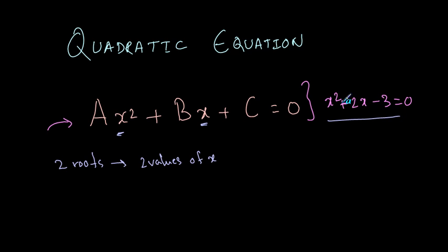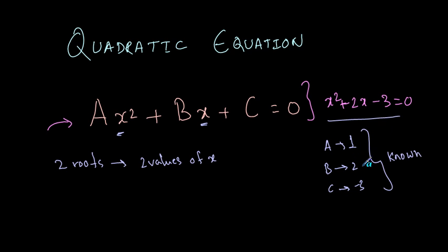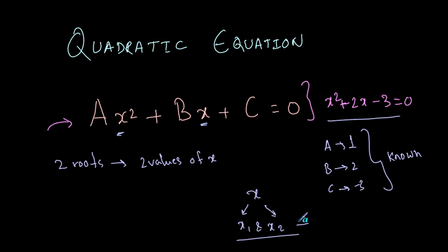So in this example, we have x squared plus 2x minus 3 is equal to 0. The values of a, b and c are: a is 1, b is 2 and c is minus 3. Most of the time these values are known to us, and we have to calculate the values of x. So x has two roots, x1 and x2, which are the roots of this equation.